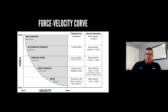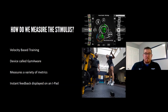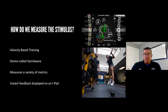How do we measure the stimulus? Those are pretty specific numbers — 0.45 meters per second is hard to judge just by watching someone squat. We do this through velocity-based training using a device called GymAware. There's a small black box with a tether we attach to a barbell or dowel, and it measures the velocity of the implement, jump height, power output, and displacement, providing instant feedback on an iPad rep to rep.